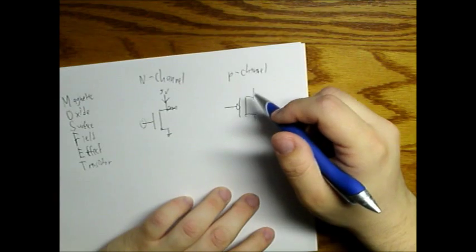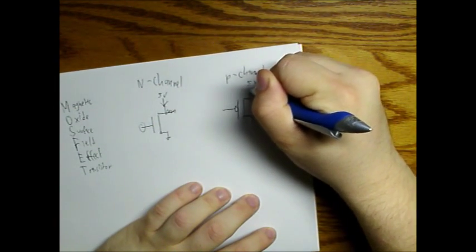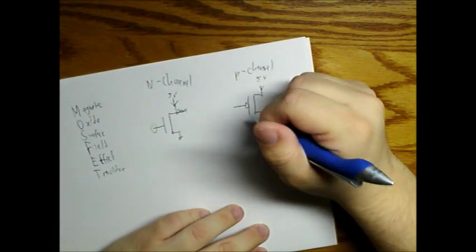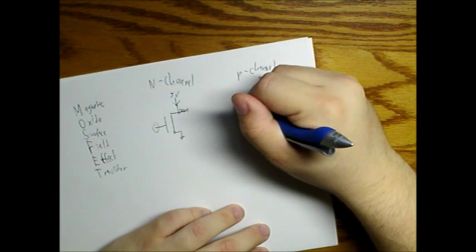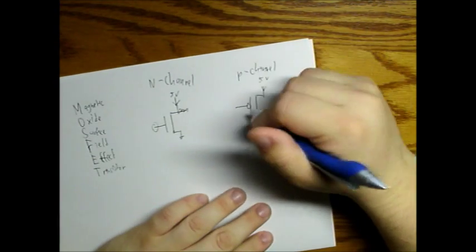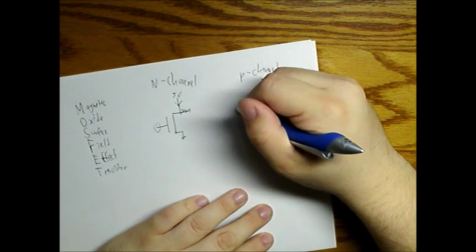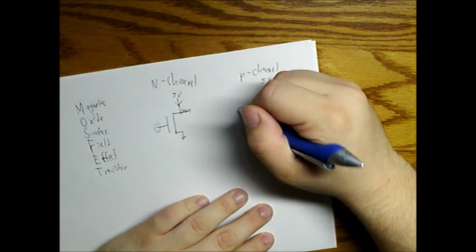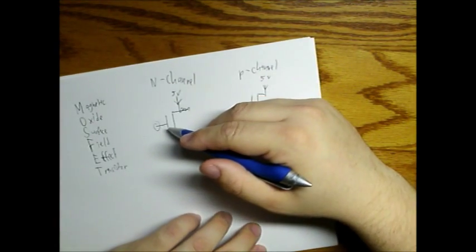For the P-channel, it is completely the opposite. We have again 5 volts. When the voltage here is logic on, or 5 volts, then the current will not flow, as opposed to it being zero volt, logic off, where the current will flow. So it is really the opposite of the N-channel.